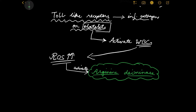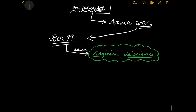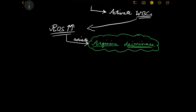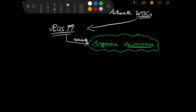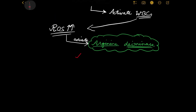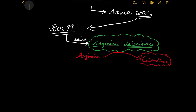Arginine de-iminase will lead to the conversion of arginine to citrulline. This is very important — arginine is converted to citrulline by the enzyme arginine de-iminase.